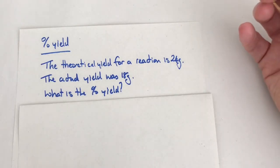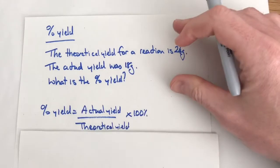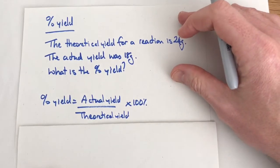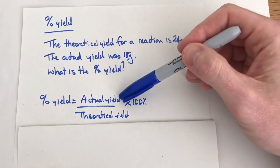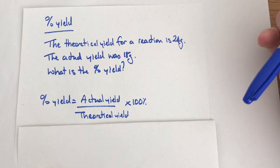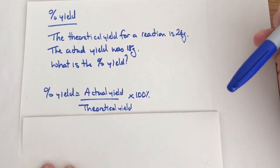To do this we use this equation. The percentage yield equals the actual yield divided by the theoretical yield, and then times by 100 percent, so we end up with a final answer as a percentage.